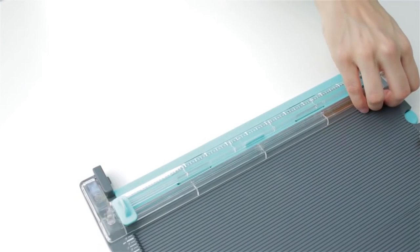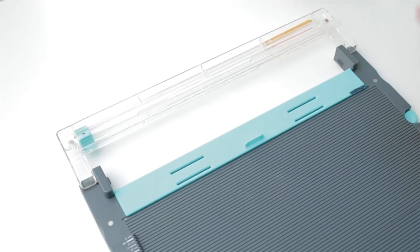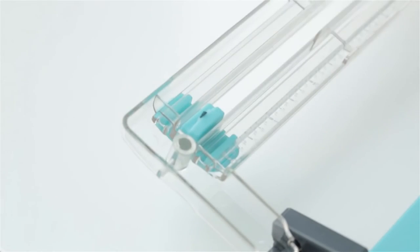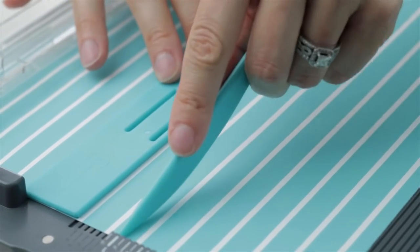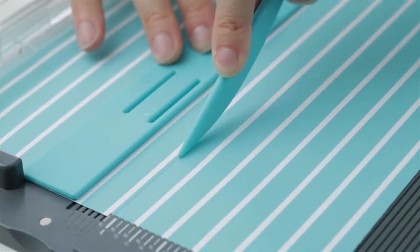To use the scoreboard, flip out the cutting bar and move the blade to the top so it's out of the way. Flip the blue alignment guide down. This helps hold the paper in place while you measure and score.